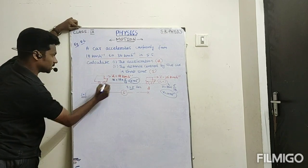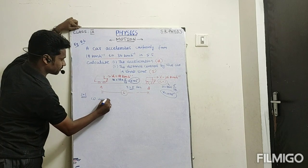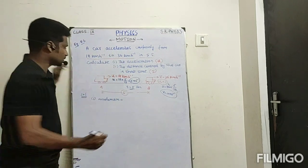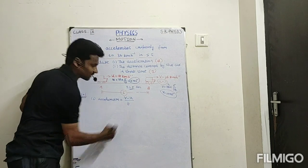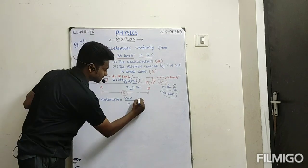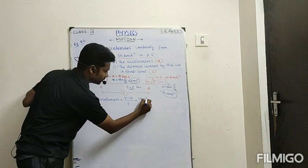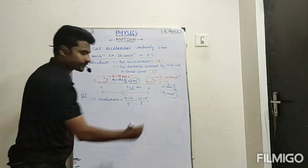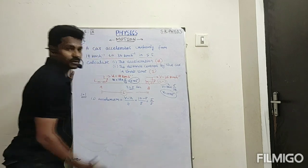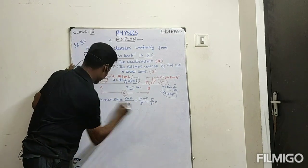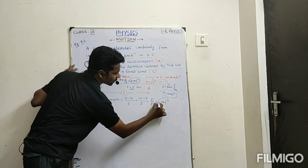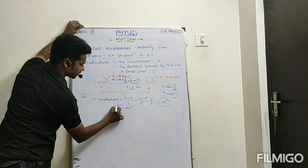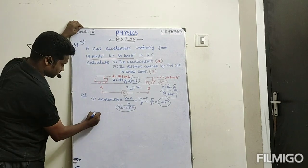Now see the first solution — acceleration. The formula for acceleration is change in velocity divided by time, that is final velocity minus initial velocity divided by time. So acceleration equals 10 minus 5, divided by 5. That is 5 divided by 5, which equals 1. So acceleration is 1 meter per second squared.